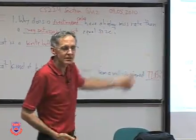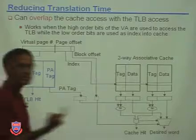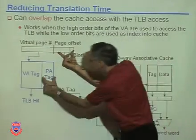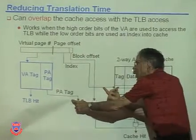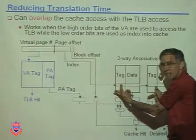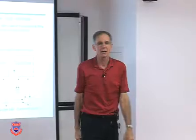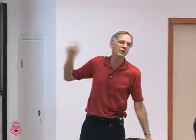We're not sending a virtual address to the cache; we're sending the physical address. Part of the physical address is the page offset, which doesn't require translation, and the other part comes from the TLB. So we start the cache access with the untranslated part, then finish with the translated part. This gives us virtual memory with TLB speedup and no time penalty.